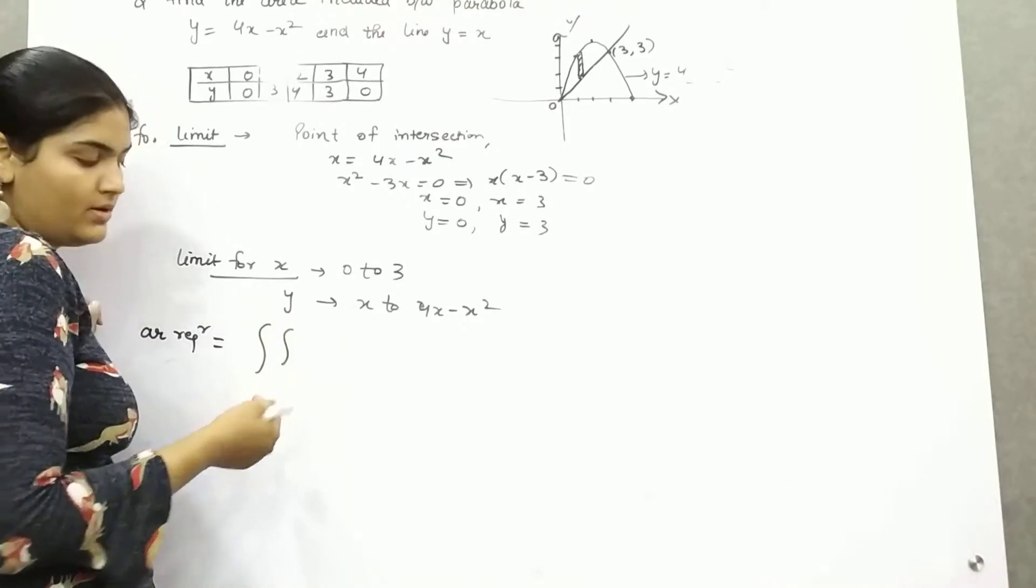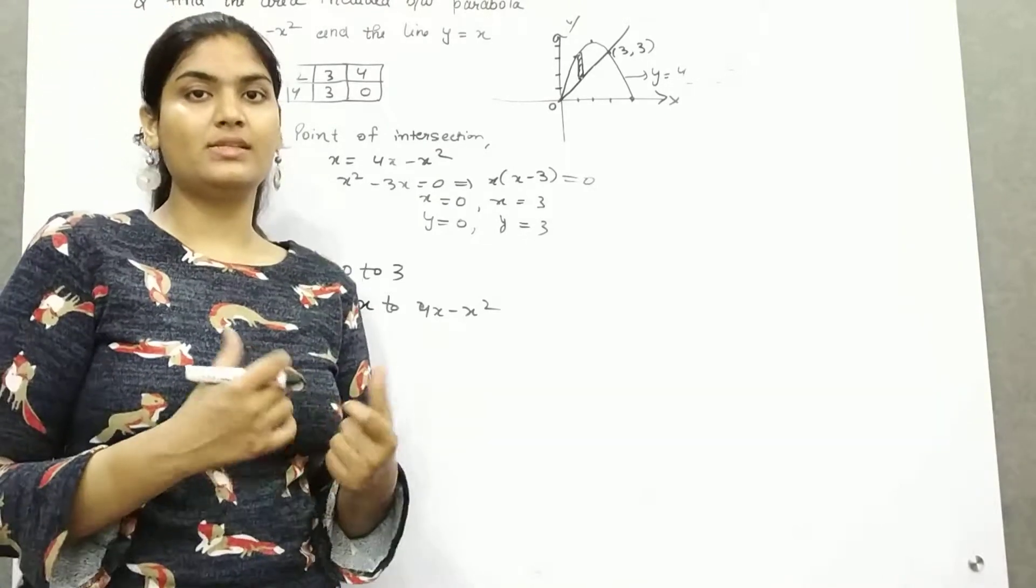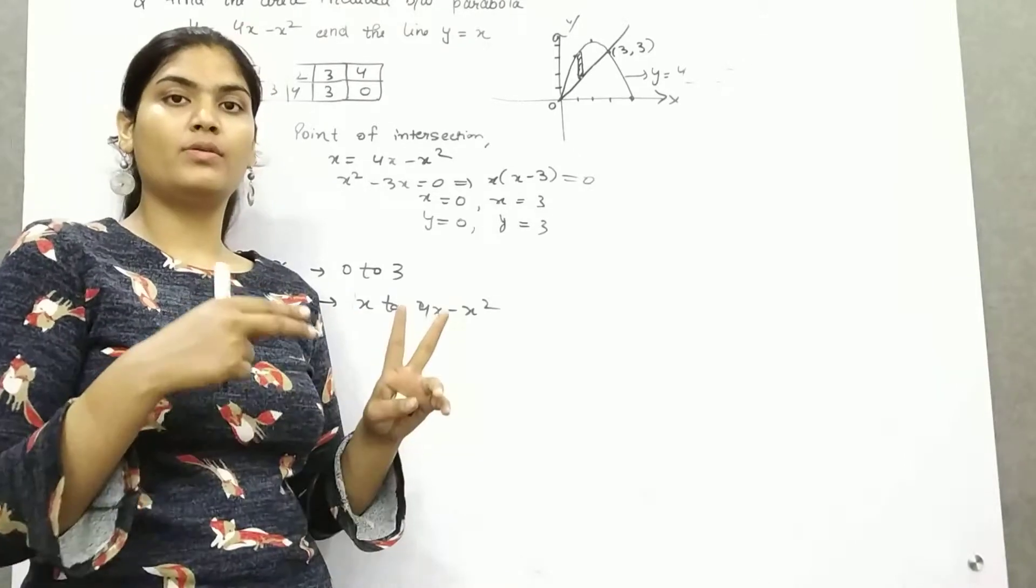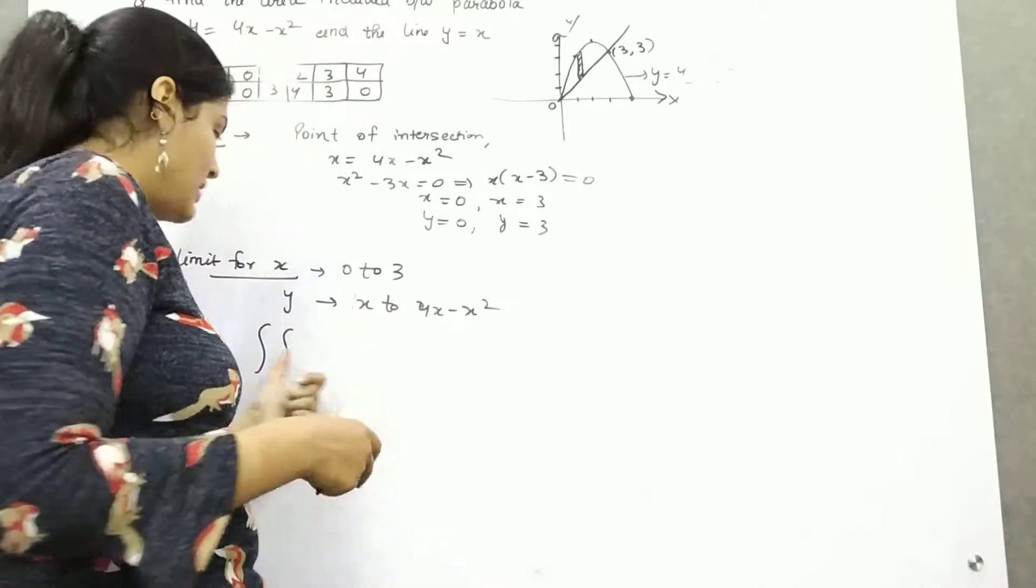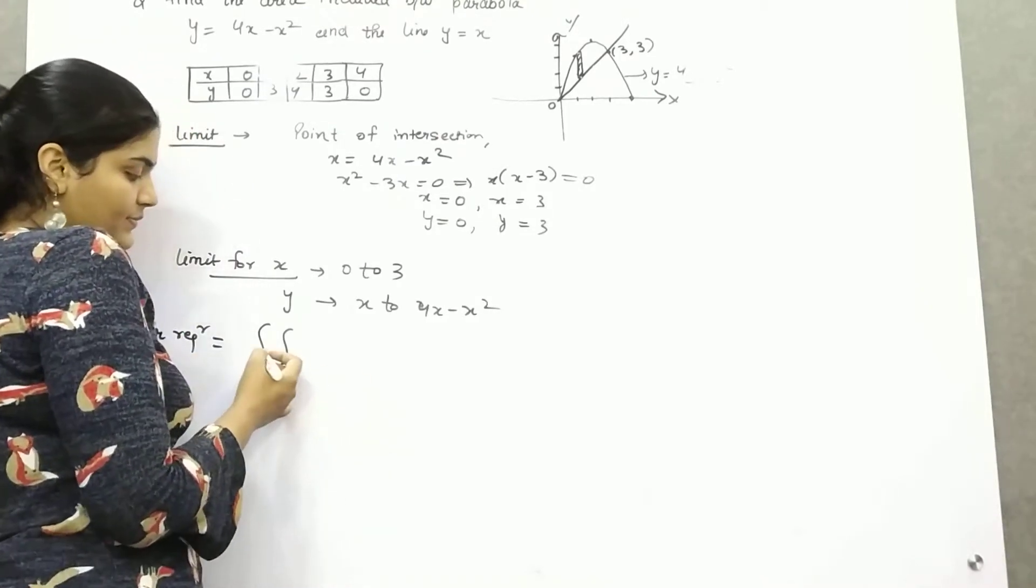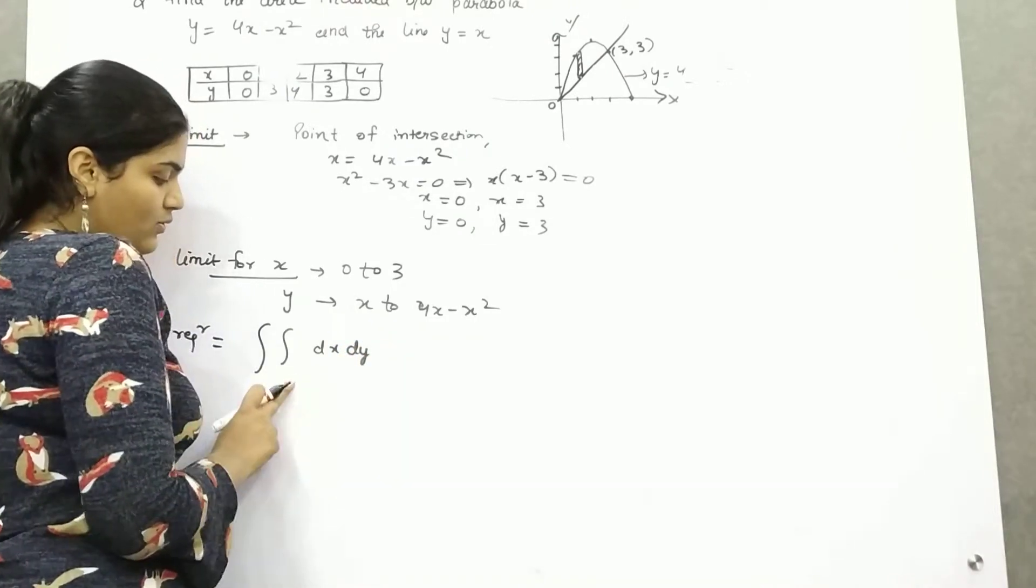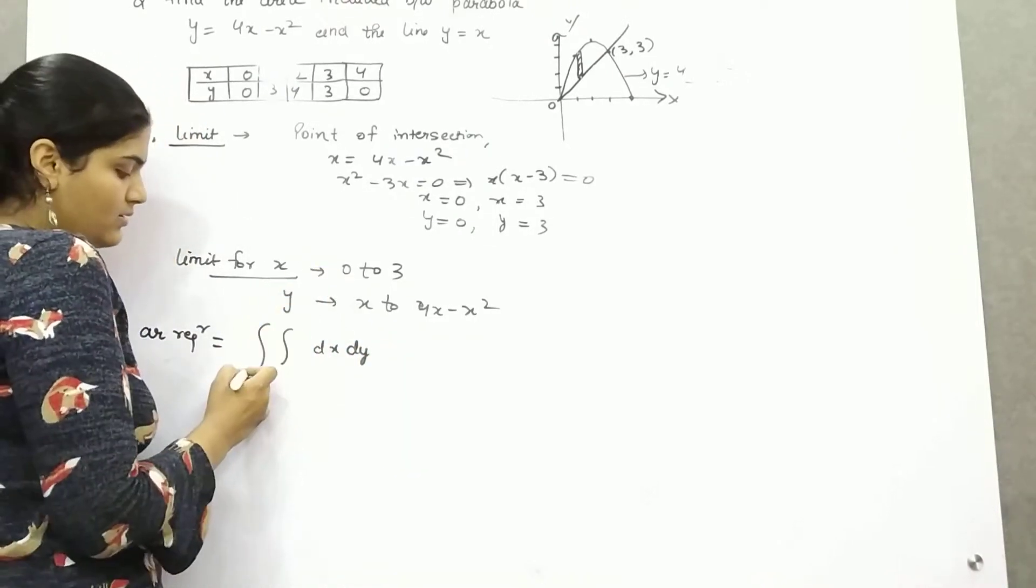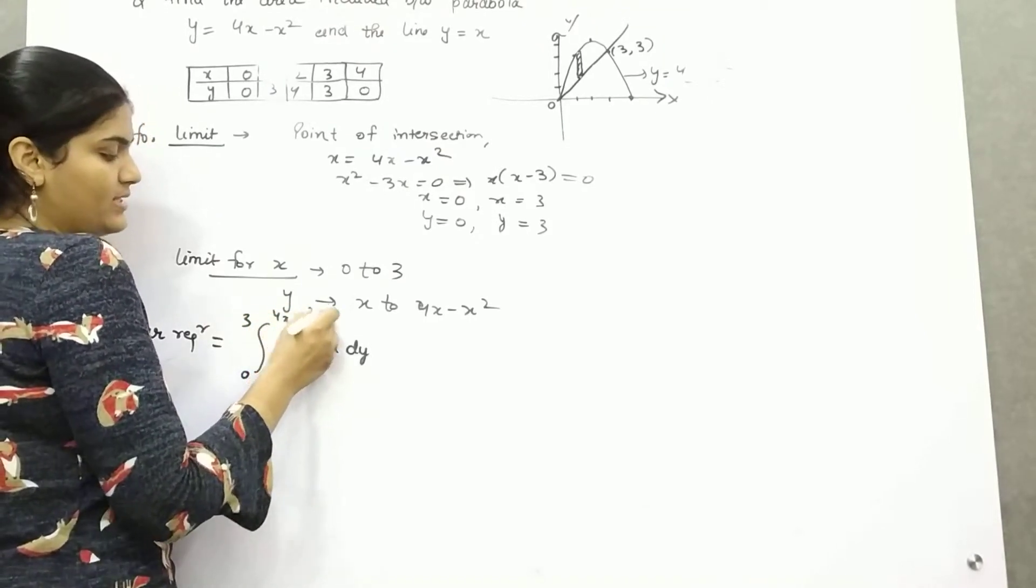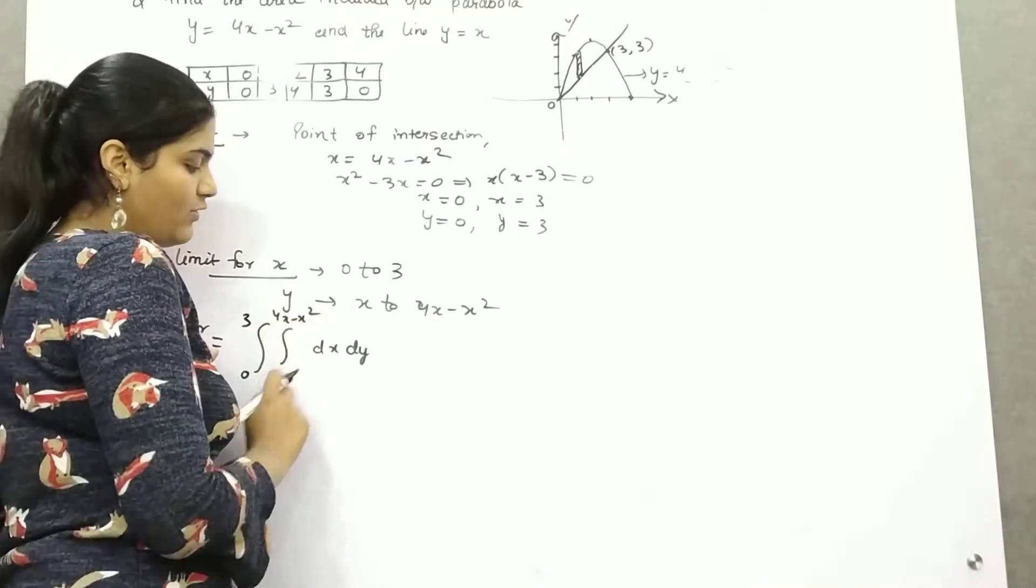Now for area between the curve, area required will be double integrals. Why we are taking double integrals? Just like if we have to find out area of something, it is in square limits. Two dimensions, length into breadth or side into side. That's why double integral, one for one length, one for another length. So dx dy. Now first limit should be constant. Another one is x to 4x minus x squared. Because this is in terms of x, so this is for y.